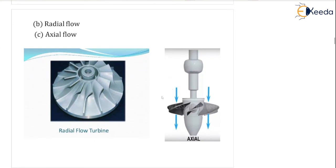Depending on the direction of flow, we also have radial flow and axial flow turbines. In the radial flow turbine, the movement of fluid is along the radius — you can see this path in the diagram. In the axial flow turbine, the movement of fluid is parallel to the axis of the turbine, which is why it is called an axial flow turbine.